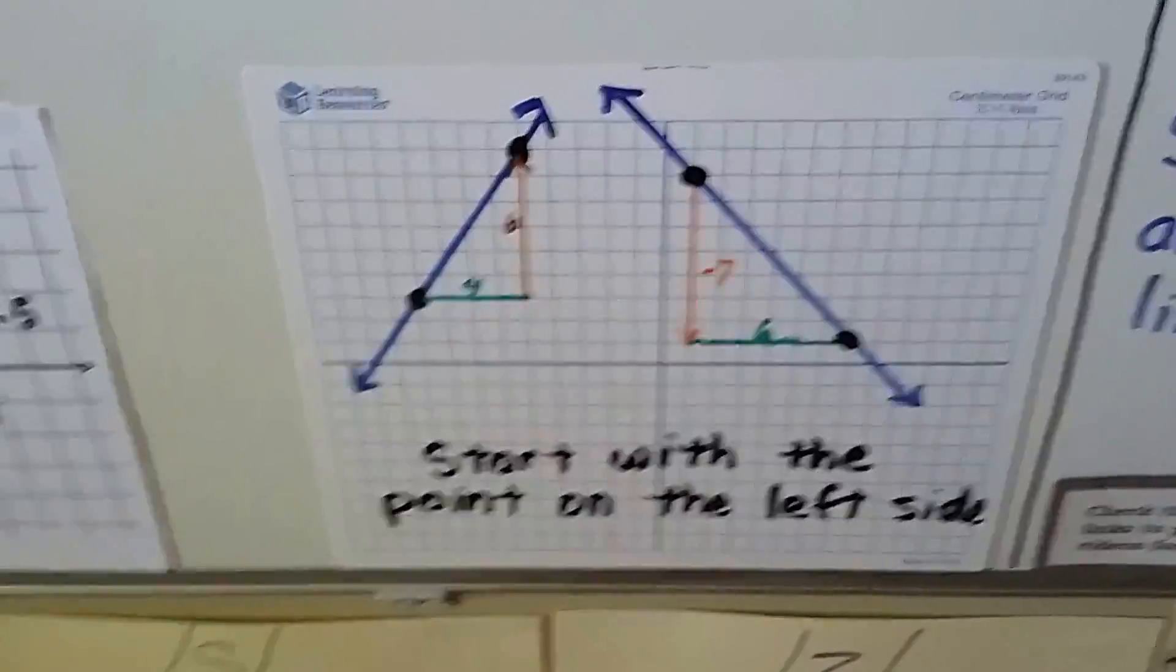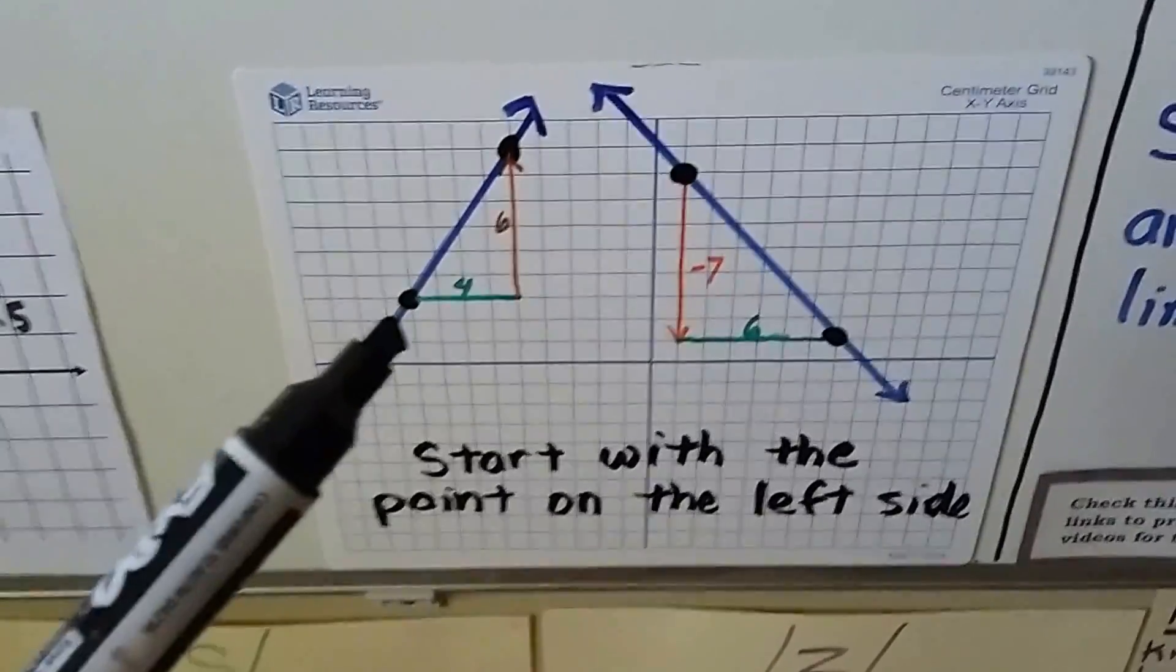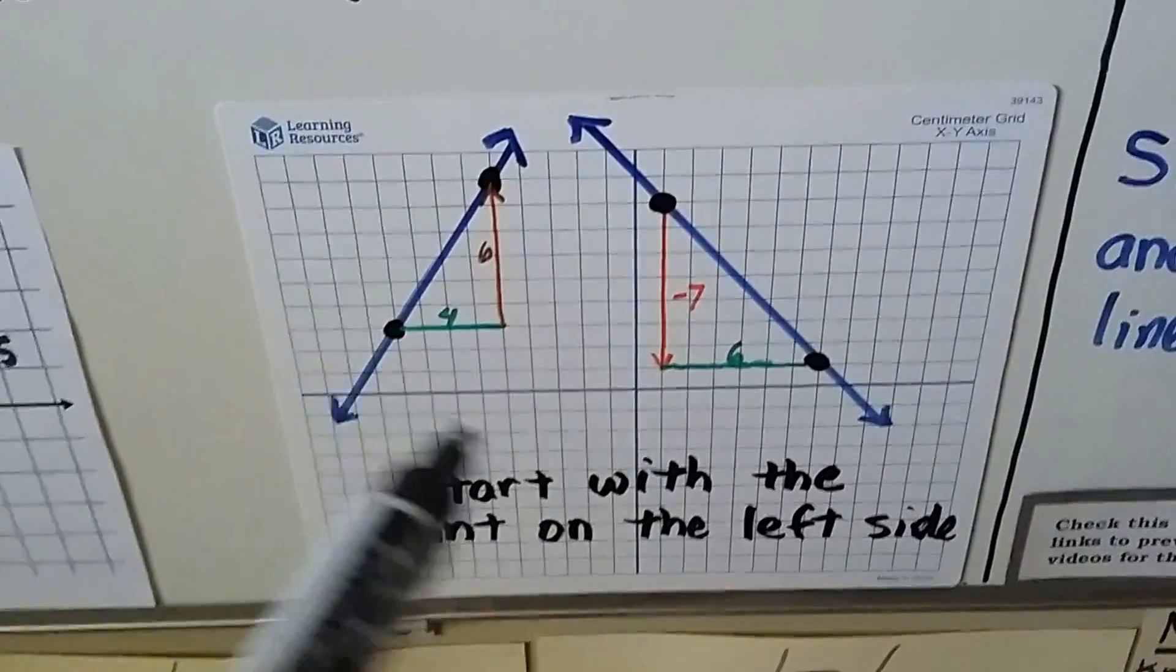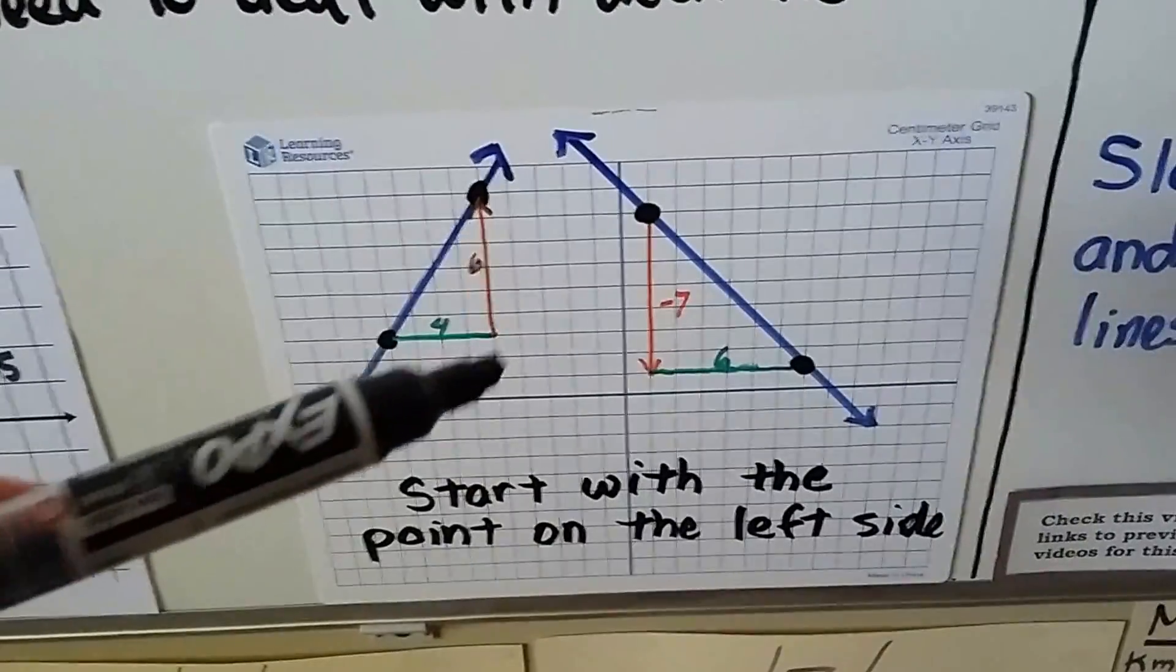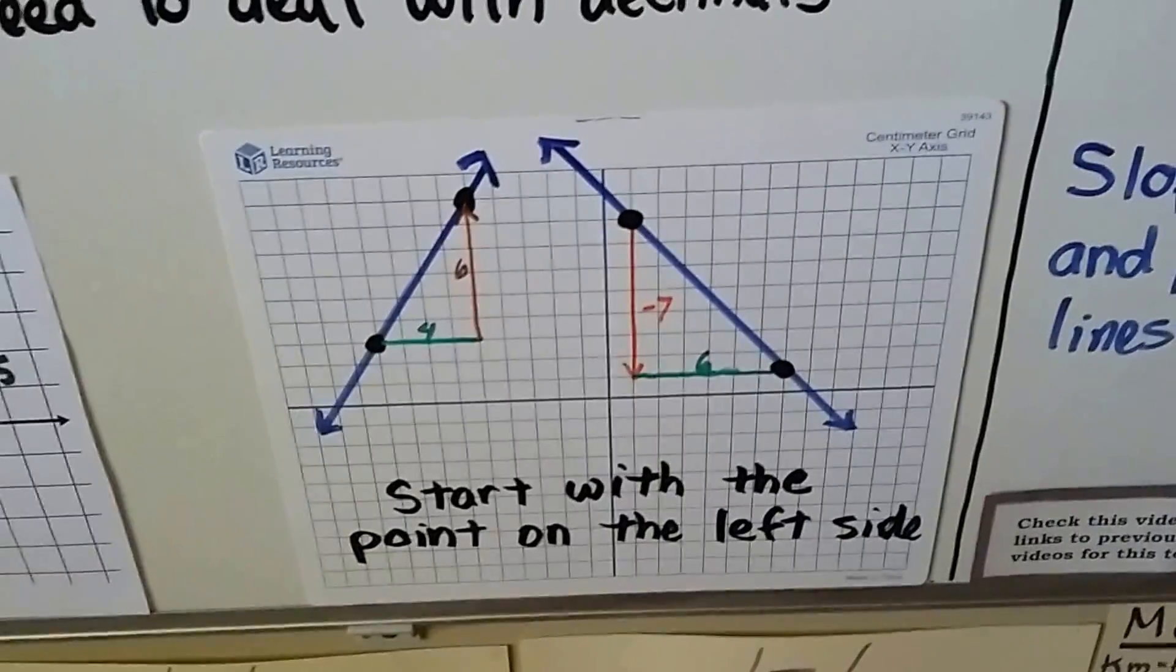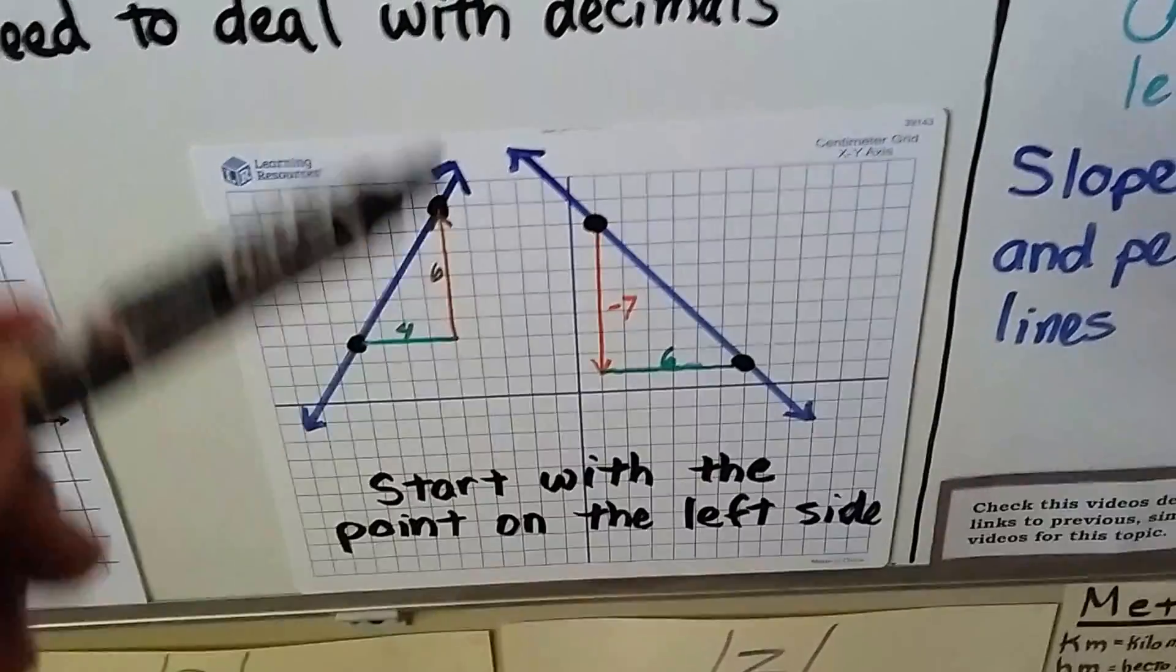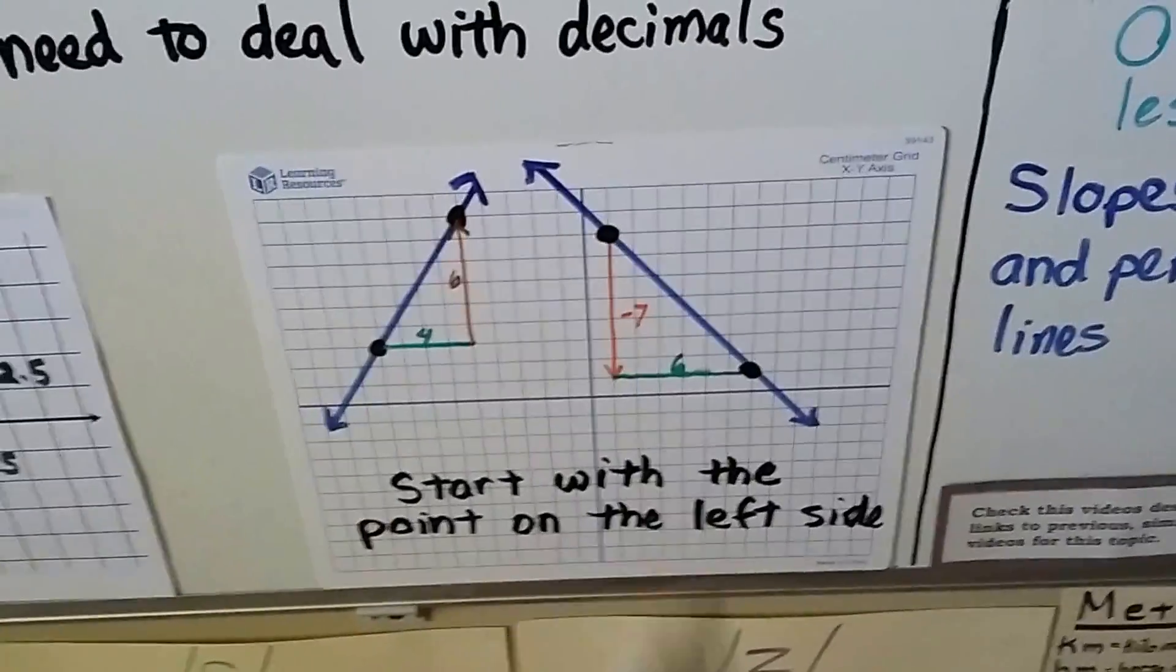So we start with a point on the left side. So that would be your x sub 1 and y sub 1, whichever one's on the left. So this one's rising to the right. This is going to be a positive slope. So we start with this point and it's going over 4 and it's going up 6. So the rise over the run would be 6 over 4, 6 fourths. For this one, it's falling to the right. So we start on the left and we count down. So that's a negative 7 because we went down. This one we counted up because it was rising. So we have a negative 7 over a 6 for our rise over our run. So that's going to be a negative slope.